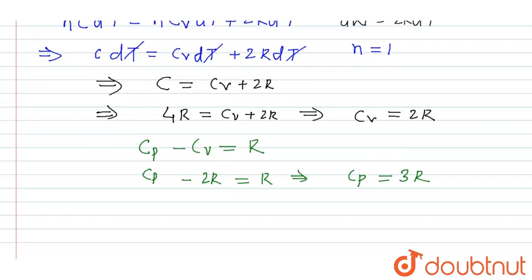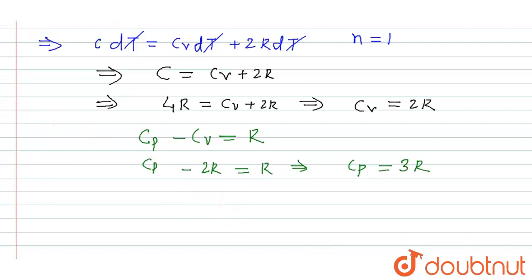So now the ratio will be that is Cp upon Cv is equal to 3R upon 2R. So R will be cancelled. The ratio will be 3 upon 2.